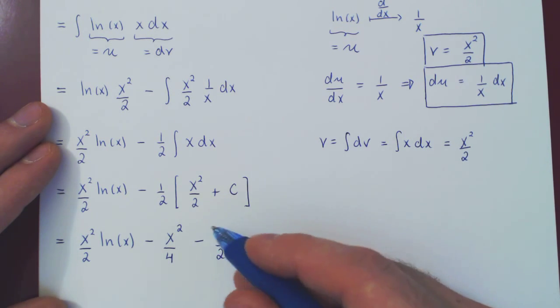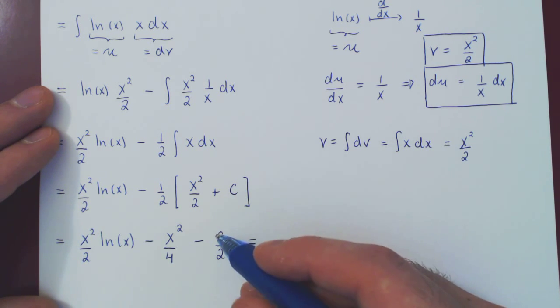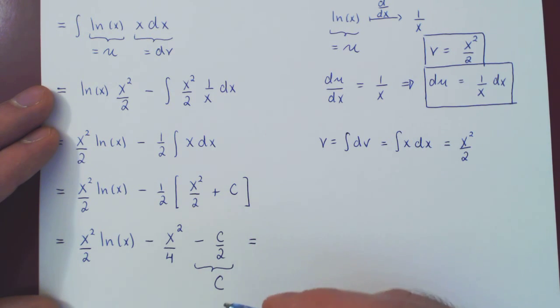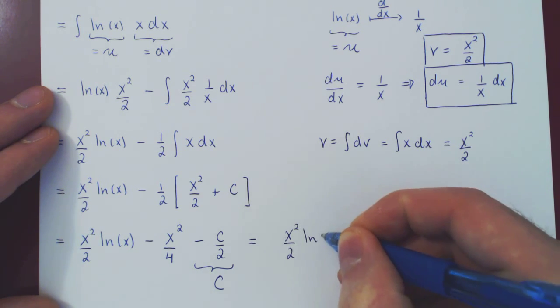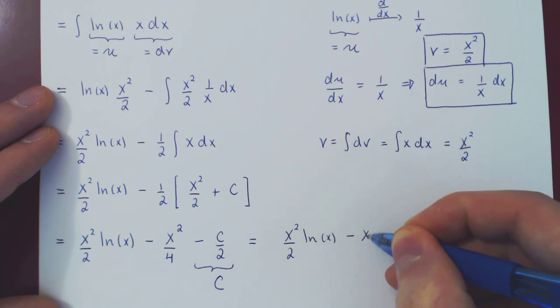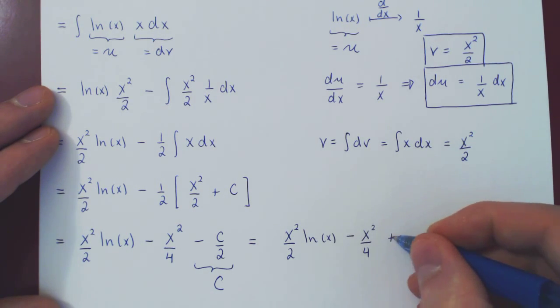But here, we can rewrite this in a simpler way. If you think of what c is, c is an arbitrary constant. Well, if c is an arbitrary constant, so is negative c over 2. So we can here abuse the notation of c and replace this by c, as we understand that all c stands for is an arbitrary constant. So in the end, we can write x squared over 2 ln of x, minus x squared over 4, plus some arbitrary constant. We still call it c.